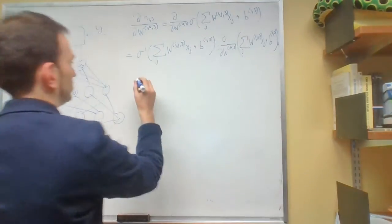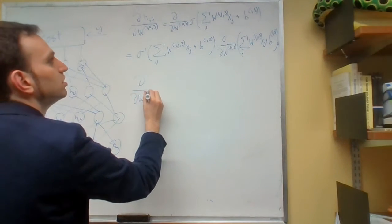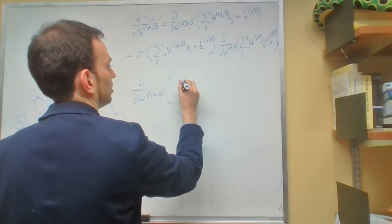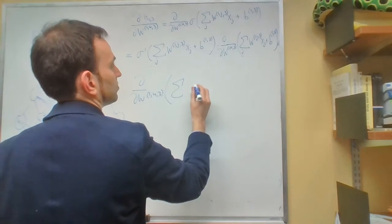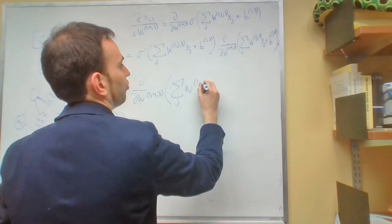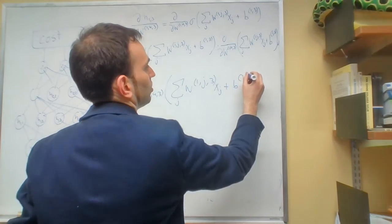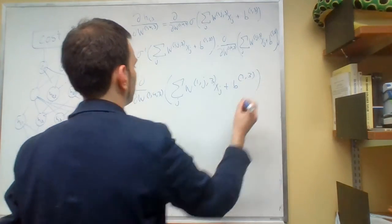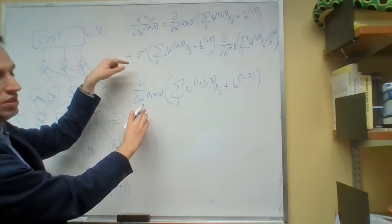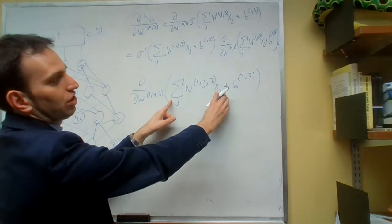So let's do that. So what we need to do is we need to compute d by dw143 of this sum of the sum over j of w1j3 times xj plus b13. Well, what we need to do is we need to take the derivative with respect to w143 of every term in this sum.